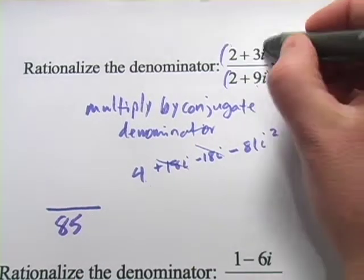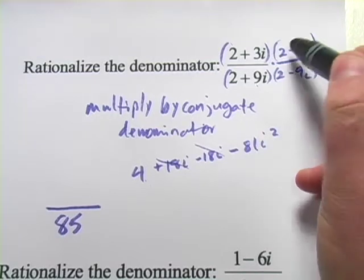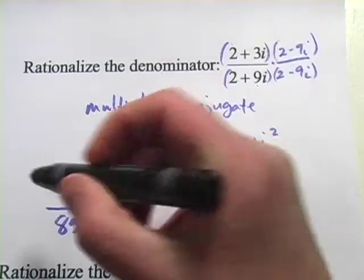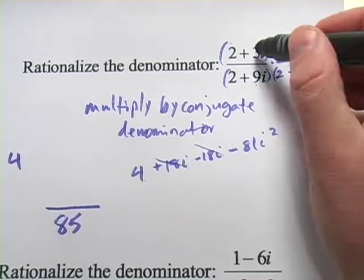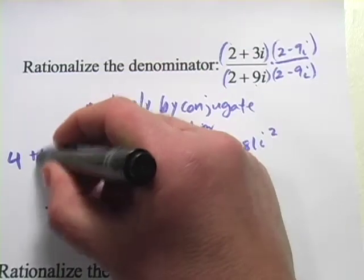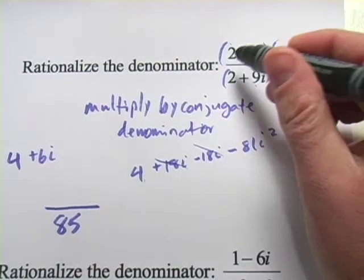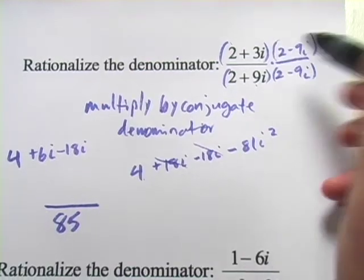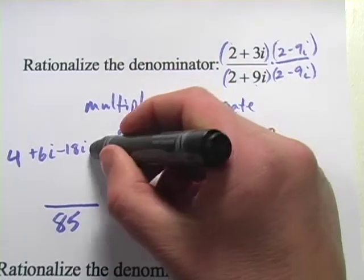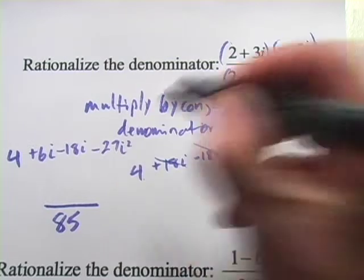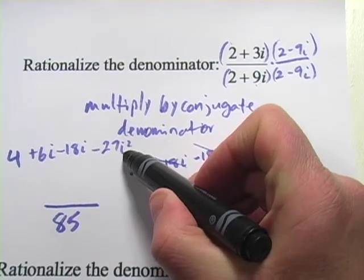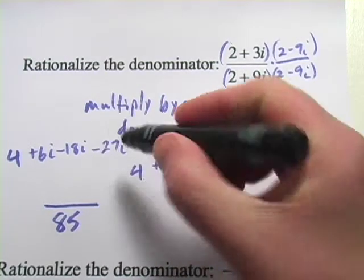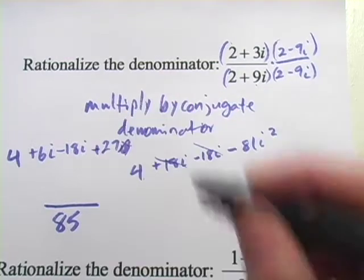Now let's work on the top here. We'll FOIL it as well. 2 times 2 is 4. 3i times 2 is plus 6i. 2 times negative 9i is minus 18i. And 3i times a negative 9i is negative 27i squared. But again, this i squared is a negative 1. So this negative 27 is going to become a positive 27.